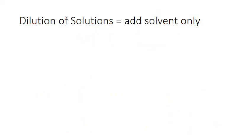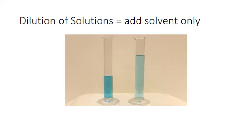A common variation of the molarity formula is known as the dilution formula. When you dilute a solution, you add solvent only — for example, adding water to tea makes it less strong. Here is a visual example with copper nitrate dissolved in water: the solution is blue, and the more concentrated solution is on the left. On the right, water has been added, the total volume has increased, and the blue is less intense because it's been diluted.